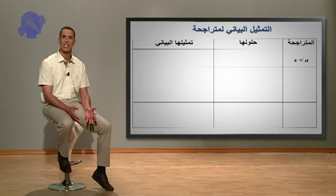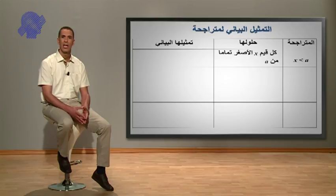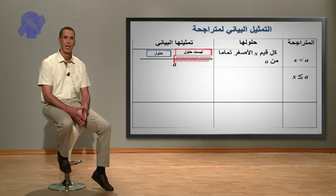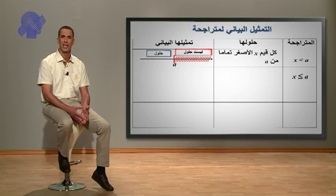التمثيل البياني لمتراجحة: لاحظوا أعزائي التلاميذ الجدول التالي: المتراجحة ثم حلولها ثم تمثيلها البياني. أولاً: X أصغر تماماً من A، كل قيم X أصغر تماماً من A هي حلول لهذه المتراجحة، الجزء المشطب غير حلول أما الجزء الآخر فهو حلول.